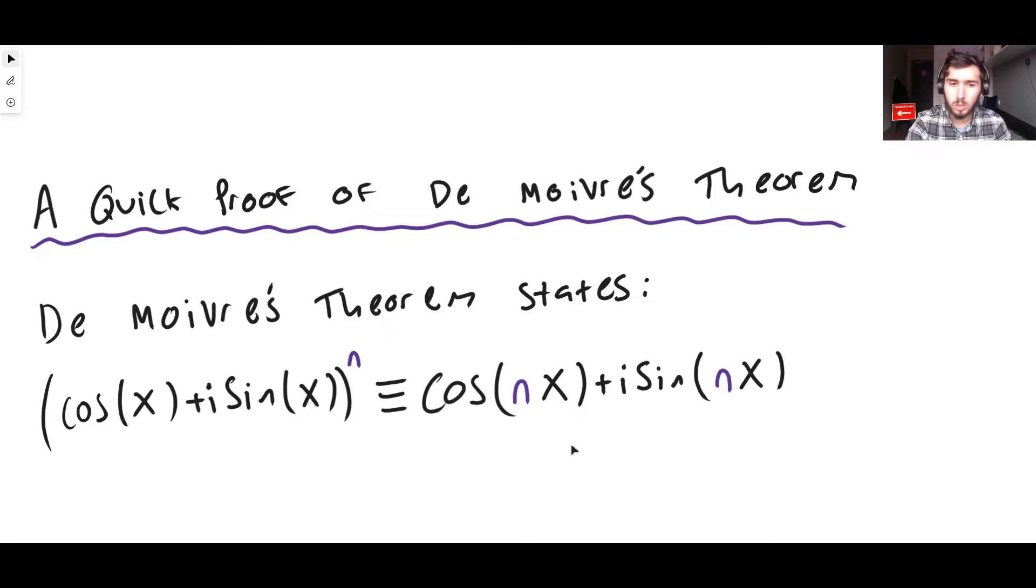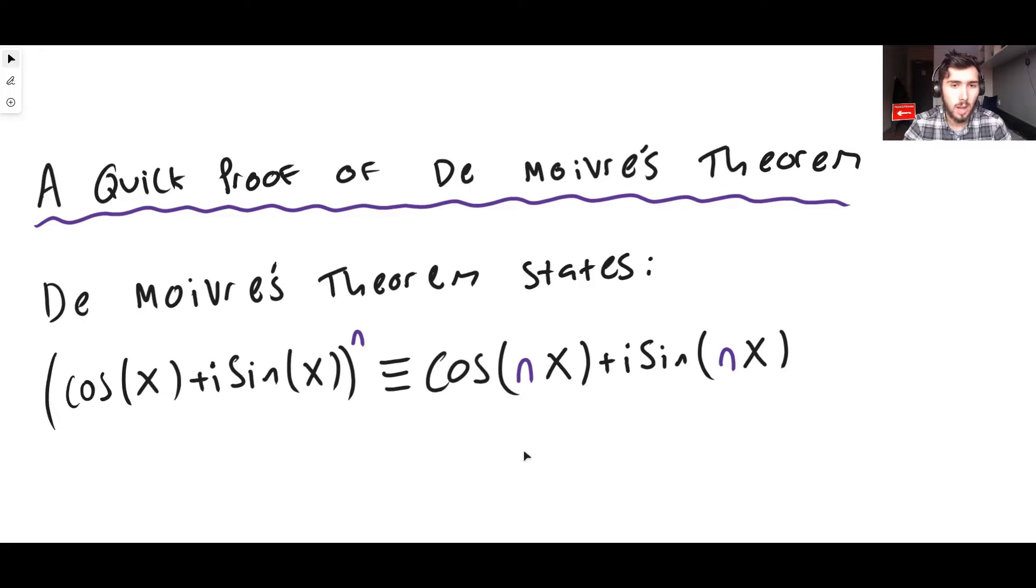So this formula, this theorem is incredibly important for things that actually are not related to complex numbers, or at least don't seem to be. And this is a very easy thing to actually derive.